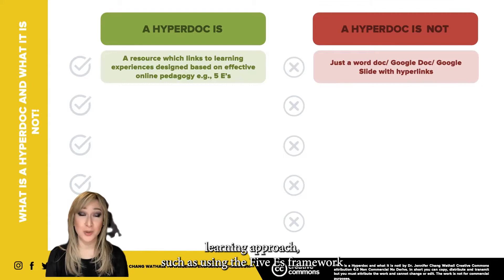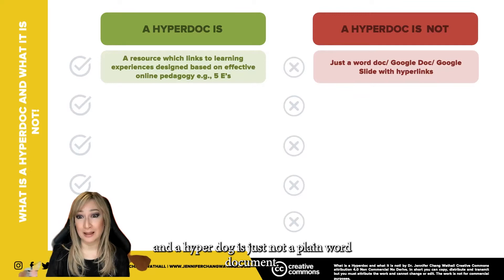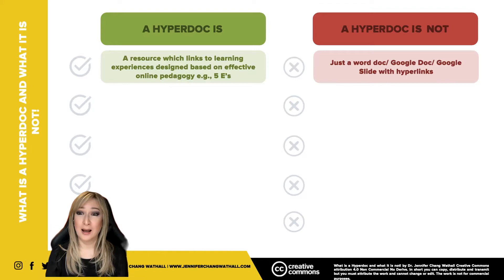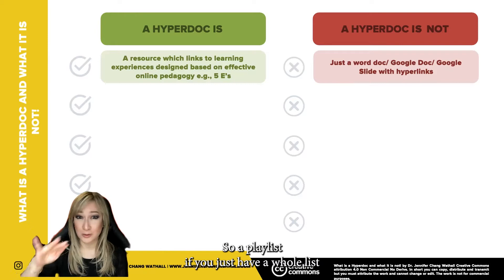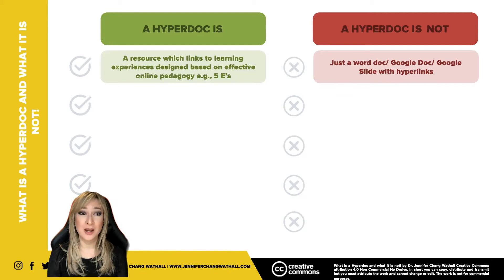A hyperdoc is not a plain Word document, Google Doc, or Google Site with lots of links to different things — that is more of a playlist. A playlist is just a whole list of different links to different resources that you go through in order. A hyperdoc is really a lot more complex than that.